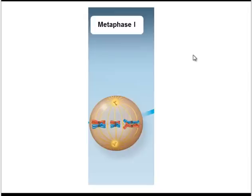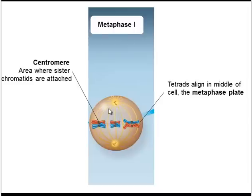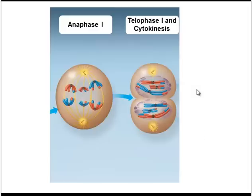After prophase I comes metaphase I. What's happening here is that our tetrads are lining up in the middle of the cell, which is known as the metaphase plate — you could think of it as the equator of the cell. Note also that the spindle is attaching to the tetrads at a point called the centromere, which is where the sisters are connected. So now that the spindle is attached, it can pull apart the homologous chromosomes — homologous chromosomes are being pulled to one pole, and to the other pole. That happens during anaphase I.